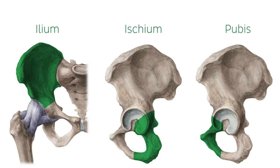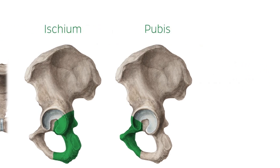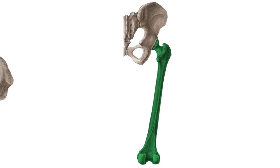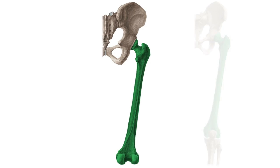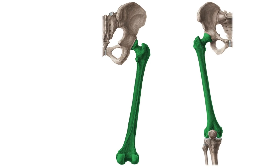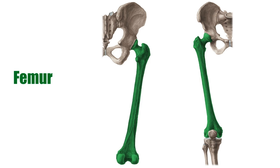The hip bone connects the sacrum to the femur, which is the long bone of the thigh. The femur, which you now see in green from the anterior and posterior view, forms the structure of the thigh. It is the longest and heaviest bone in the body.